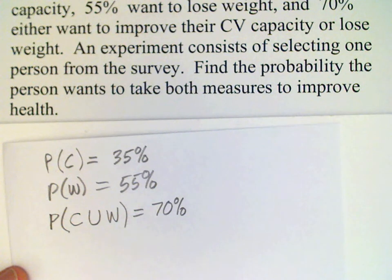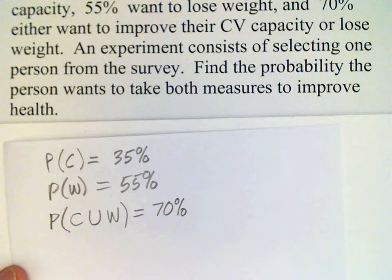And now we're asked to find the probability that the person wants to take both measures to improve health. Both the one and the other—that indicates intersection.